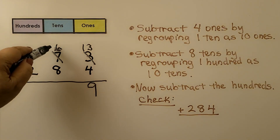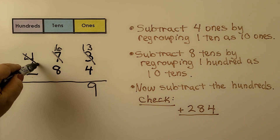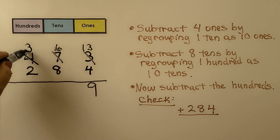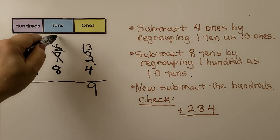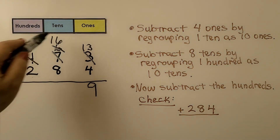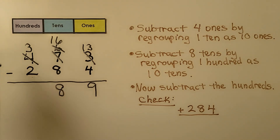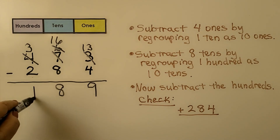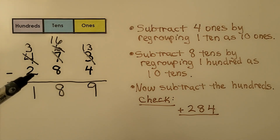Now we have six tens and we need to take eight away, but we don't have enough. So we're going to cross off the four hundred, make it a three hundred, and give ten tens to the tens place. So instead of six tens, now we have sixteen tens. Sixteen minus eight is equal to eight. Three hundreds minus two hundreds is one hundred, and we can check it. We add one hundred eighty-nine plus two hundred eighty-four — if it equals four hundred seventy-three, we know we did our subtraction correctly.